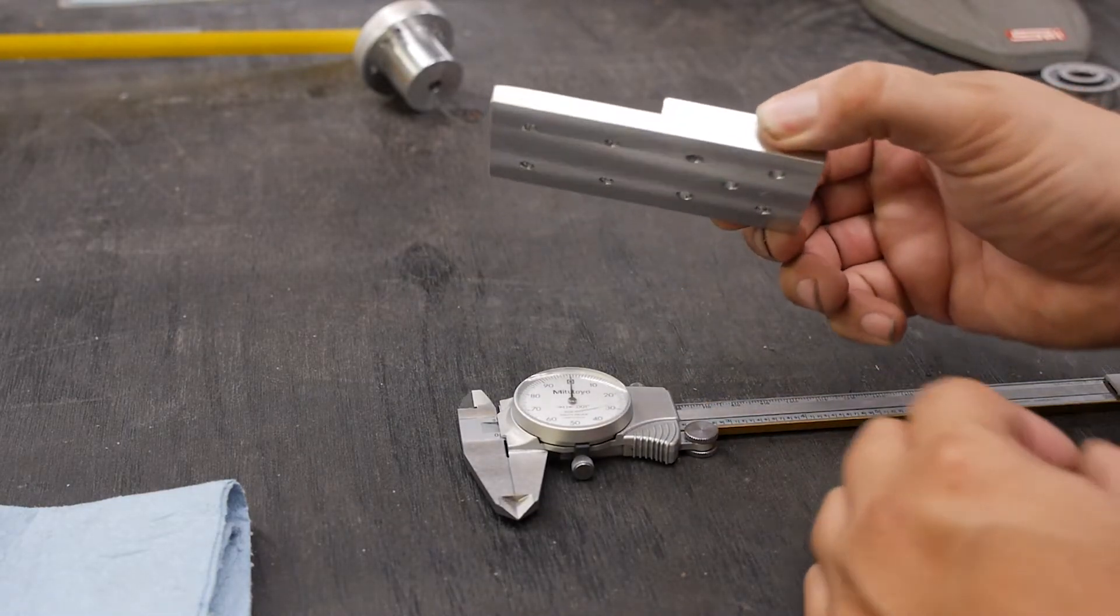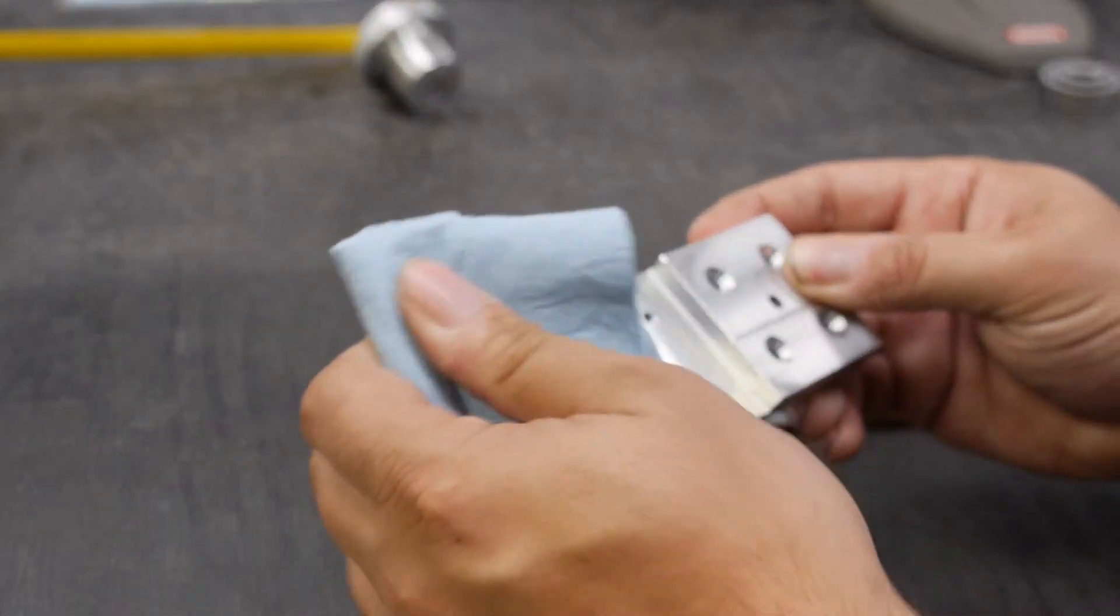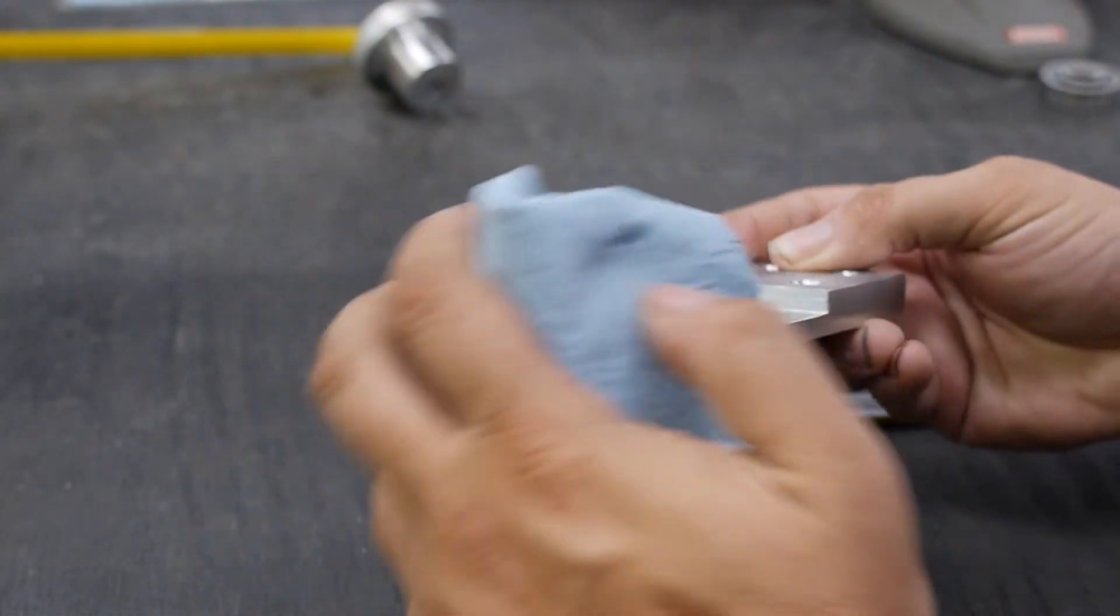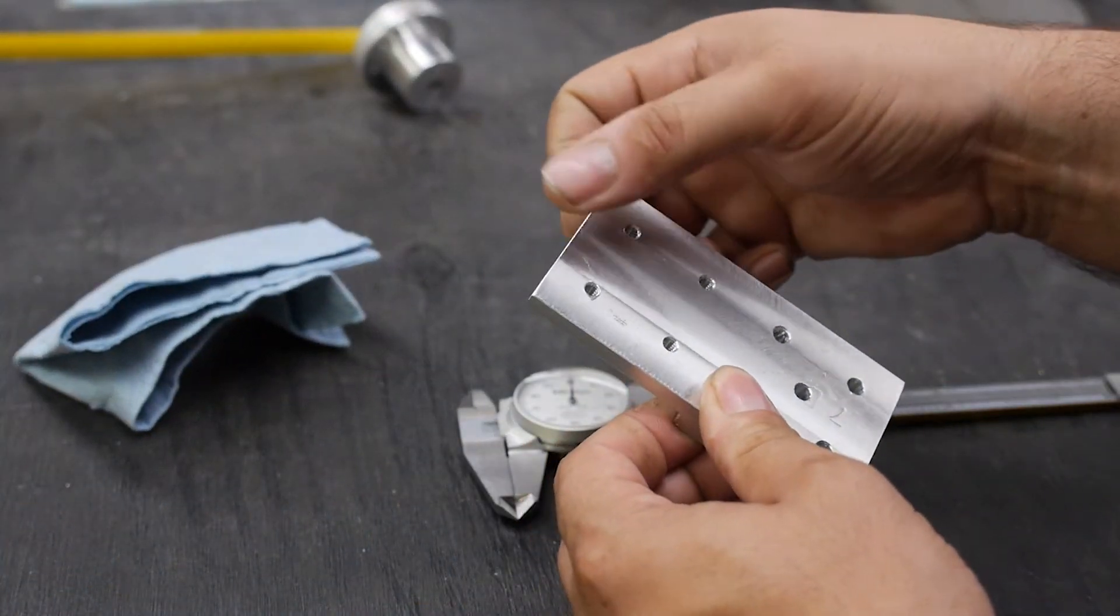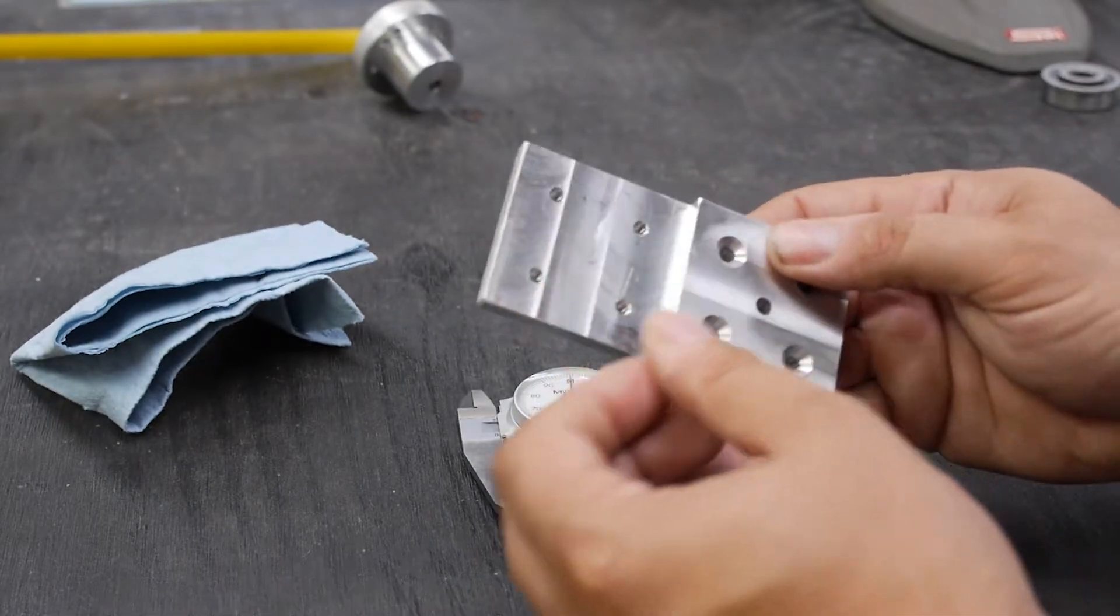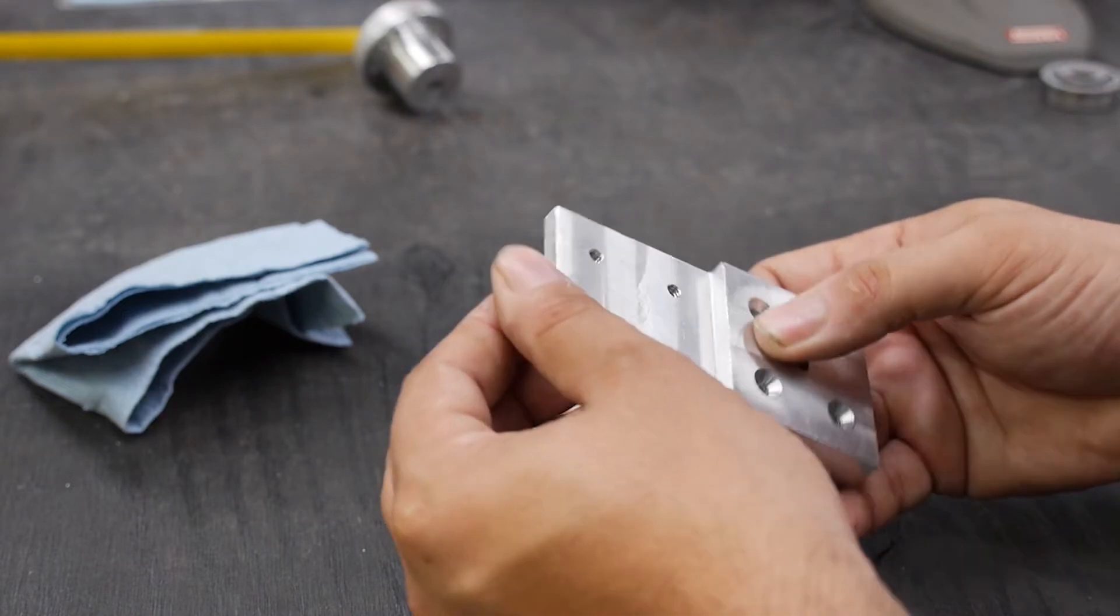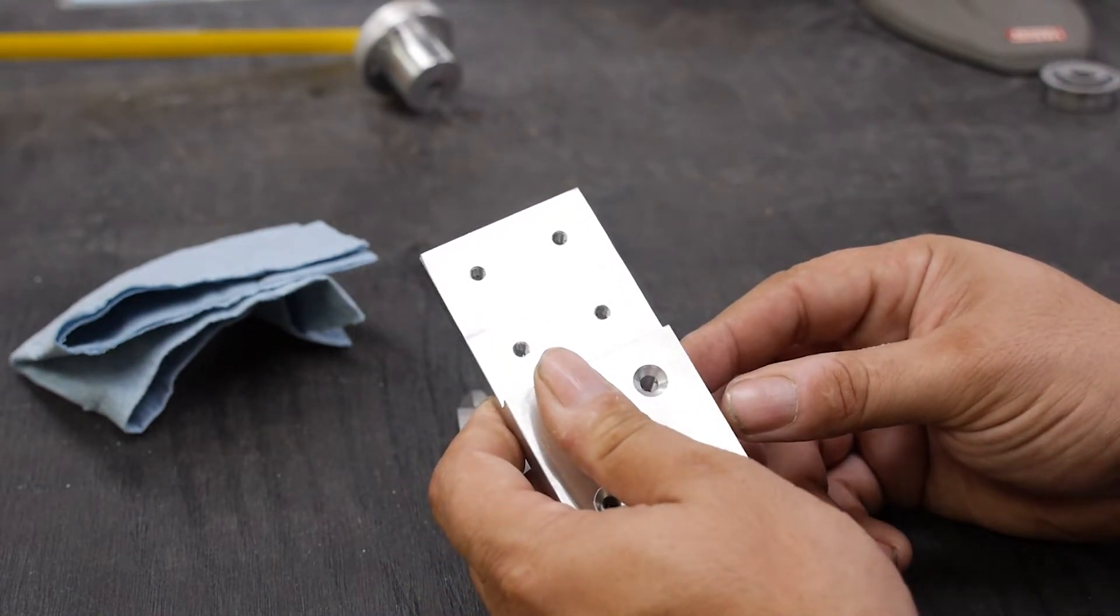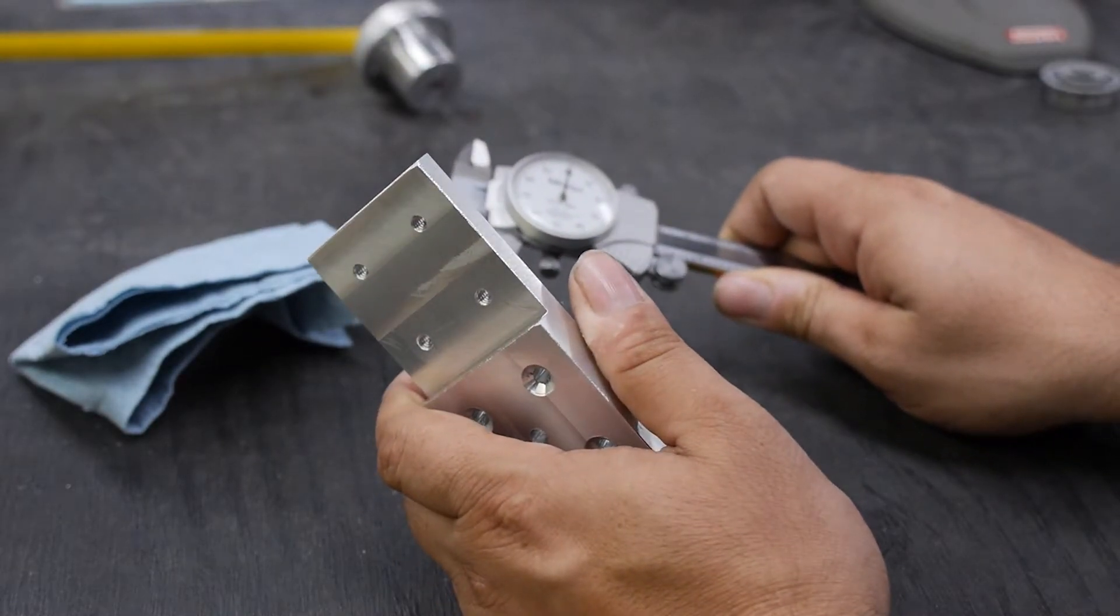Next, we want to turn our attention to the workpiece that we're measuring. We want to clean it off to remove any chips and debris. We also want to carefully check that there are no burrs or rough edges in the vicinity of our measurement that are going to cause an error. After we've done those three things, we're ready to make our measurement.